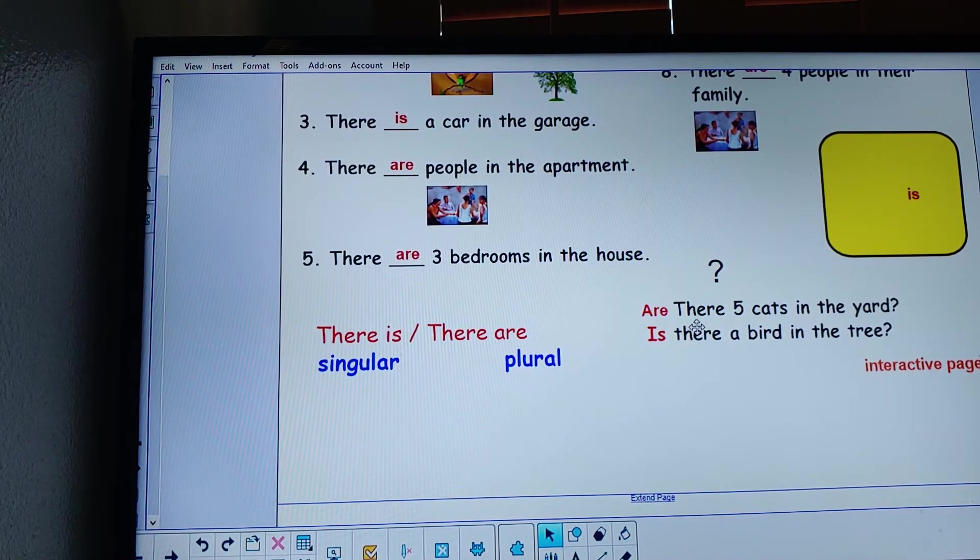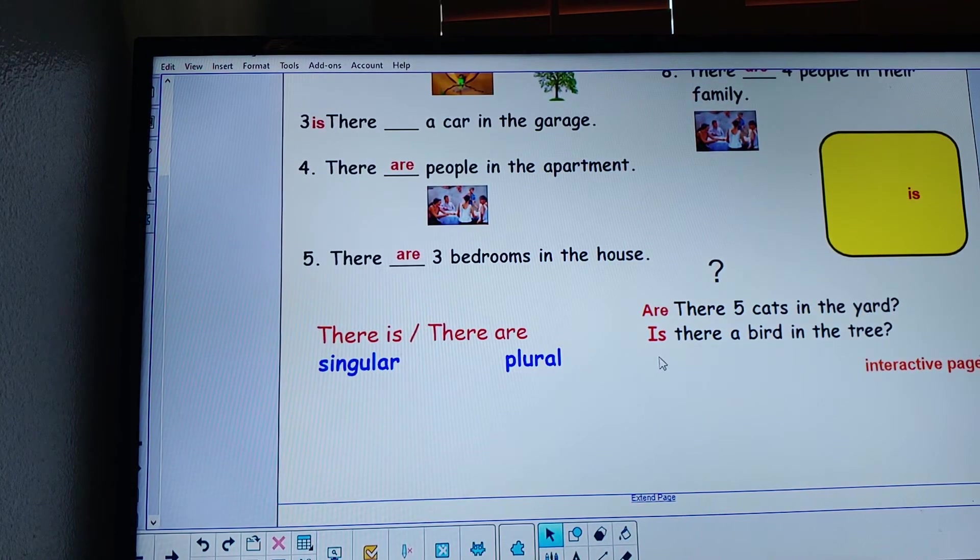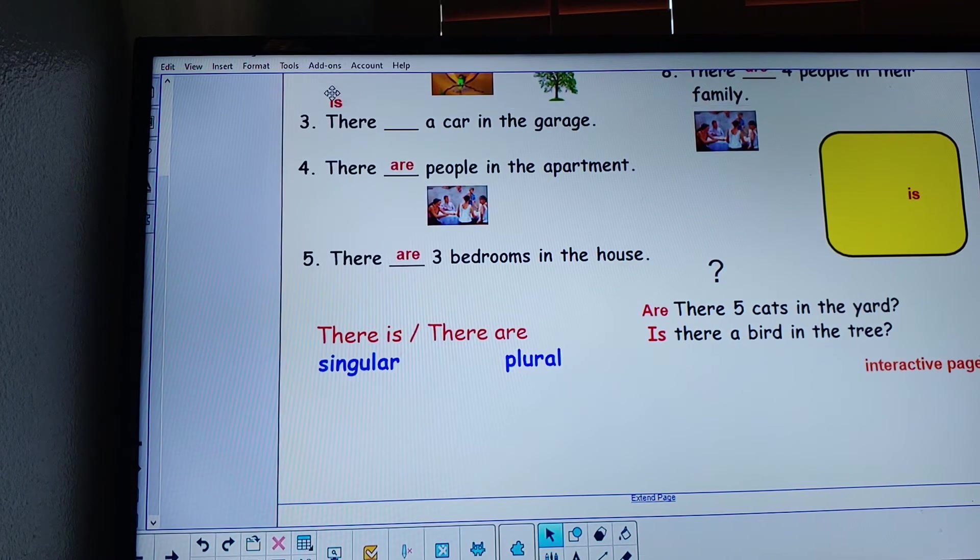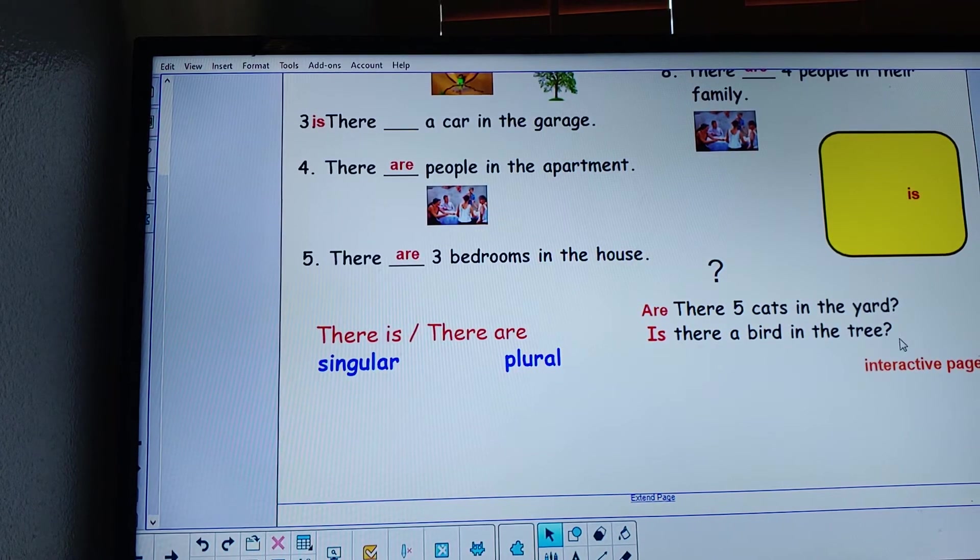Are there five cats in the yard? Or if I do this with is: is there. Is there a bird in the tree? So by moving the verb to be from after to in front, we create a question.